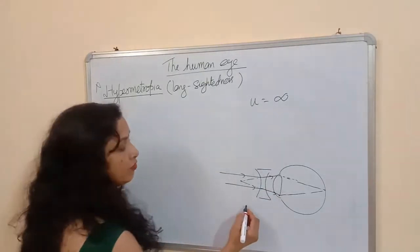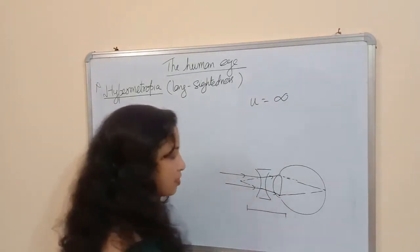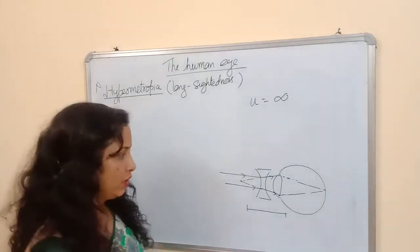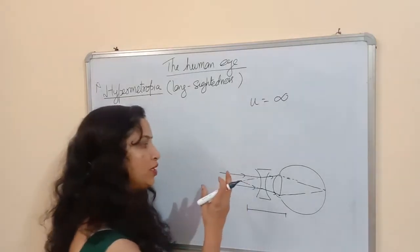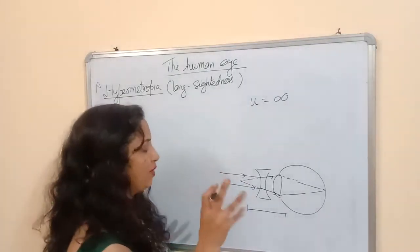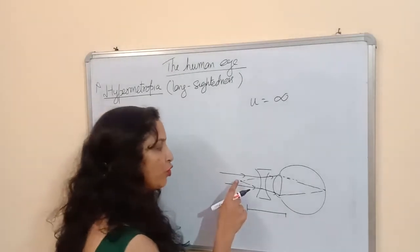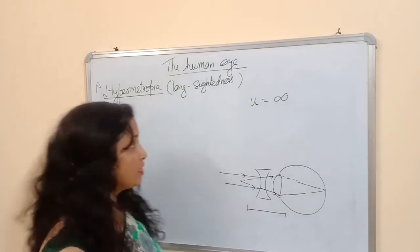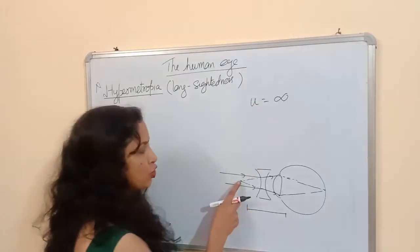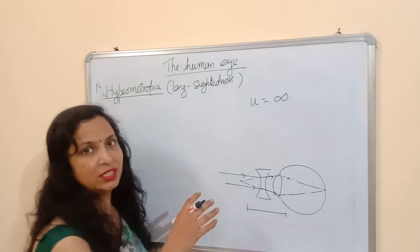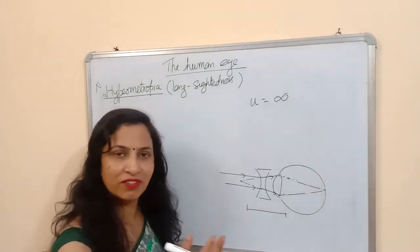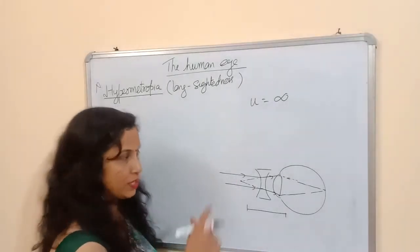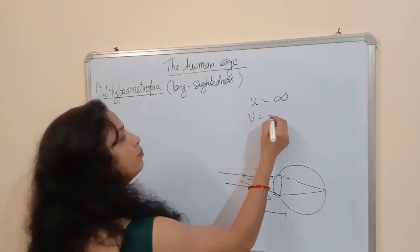The maximum distance that a person can see clearly is their far point. The image should be formed at that place where the person can see clearly. So if an object is at infinity, the image is formed at 80 cm. We always represent the distance of the object with a negative sign. V is negative, and the image is also formed towards the object side, so V should be minus 80 cm.